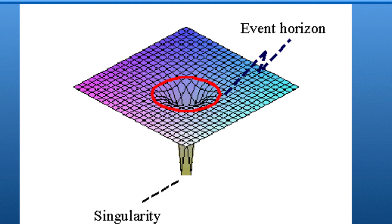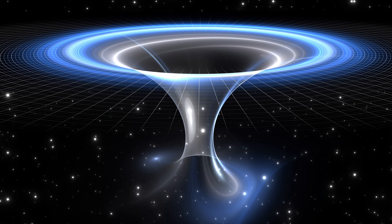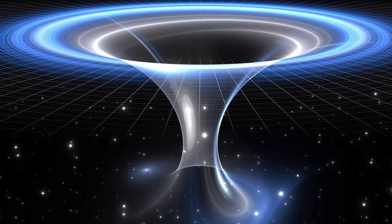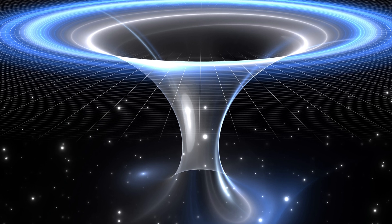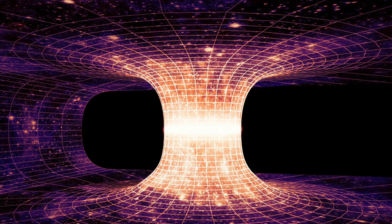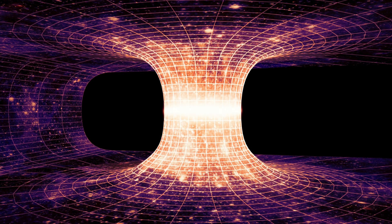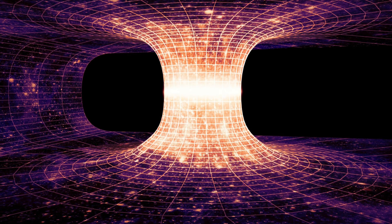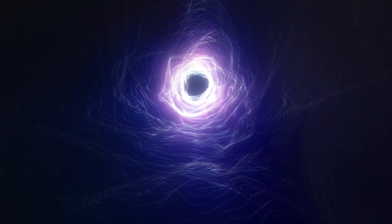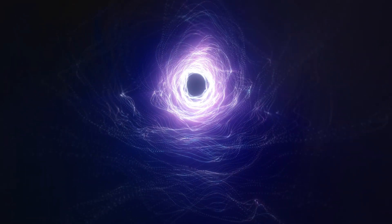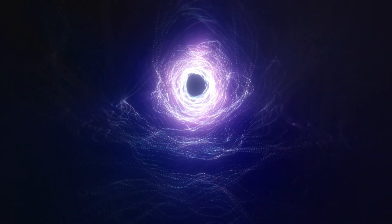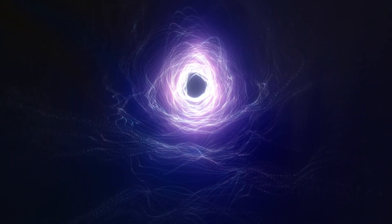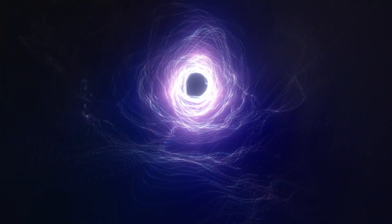The Einstein-Rosen bridge connects two black holes, creating a tunnel-like structure. However, these wormholes are non-traversable — the collapse is almost instantaneous, making traversal impossible. These structures are of theoretical interest as they provide insights into the nature of black holes and the geometry of spacetime.